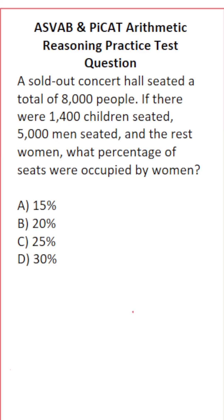So the first thing we have to figure out is how many women are in the concert hall. To do that, we're going to take the 8,000 people who are in the concert hall, and subtract the 5,000 men who are there. 8,000 minus 5,000 is going to be 3,000.